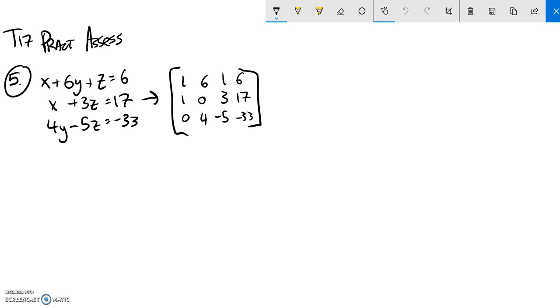We are going to solve this system right here. I've already written it as a matrix, and please take note. There was no y in this equation, in the second equation. So the second row has a 0 in the y column.